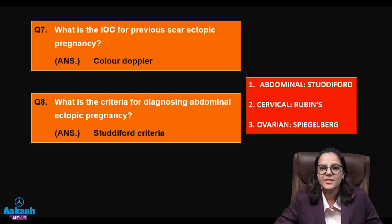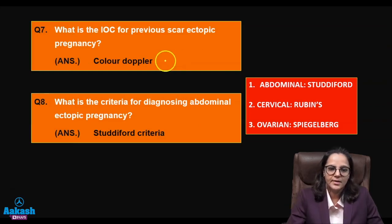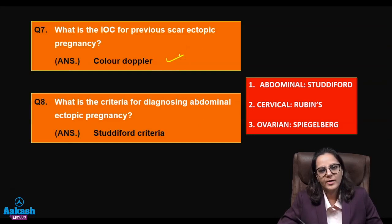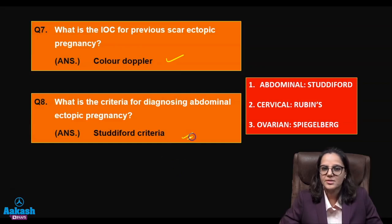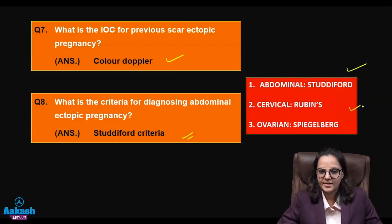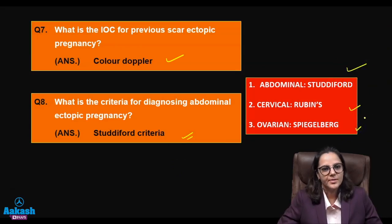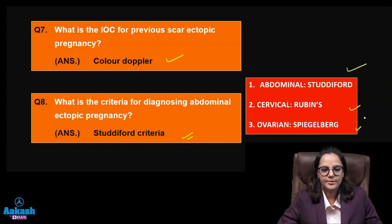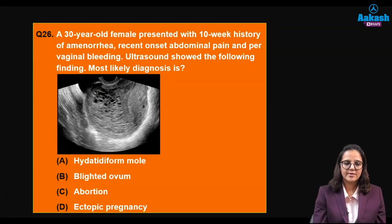The investigation of choice for previous scar site ectopic is color Doppler. Regarding diagnostic criteria: for abdominal pregnancy, it is the Studdiford criteria; for cervical pregnancy, it is the Rubin's criteria; and for ovarian pregnancy, it is the Spiegelberg criteria. These are important to memorize.